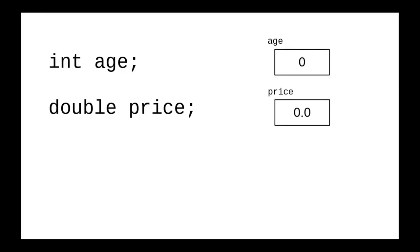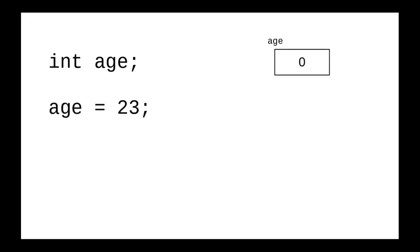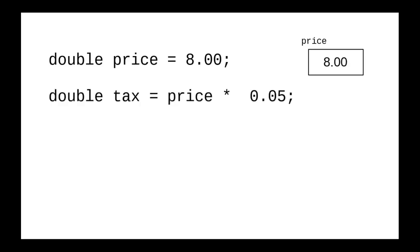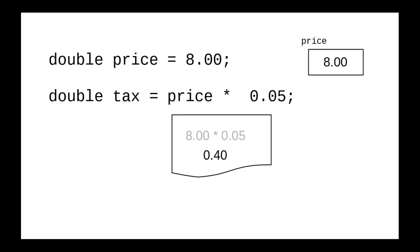You can assign new values to variables. Let's assign a value to age with this statement. The way Java does this is to look at the right-hand side, figure out what it works out to — in this case 23 — and then that is stored in the variable on the left-hand side, replacing whatever used to be there. It's also possible to declare a variable and give it a value in one step. In this case, the right-hand side of the equal sign works out to 8, and that gets stored in the newly declared variable price. What happens with this assignment statement? We always start off with the right-hand side and figure out what it works out to.